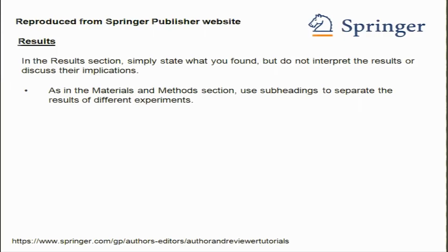What I am going to show you is some guidelines that are from publishers. For example, Springer — the link is given in the slide below — really tells you how you should write your results section. The results section simply states what you found without actually interpreting your results; specifically it is an observation. You should not interpret the results or discuss the implications.